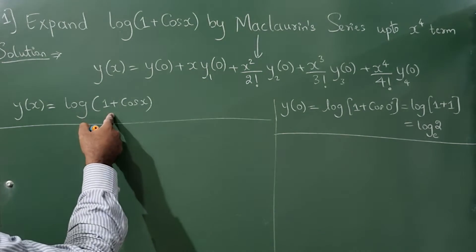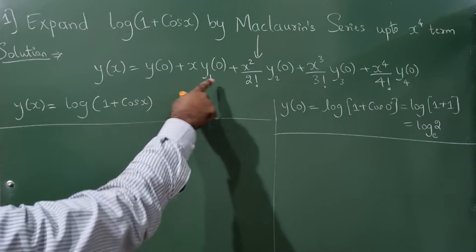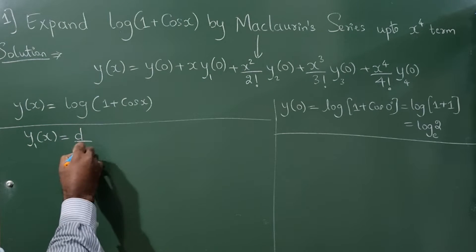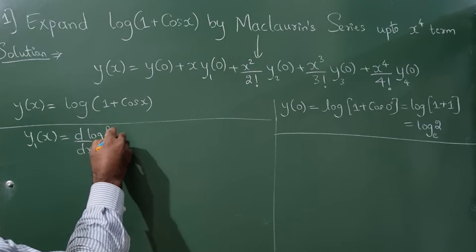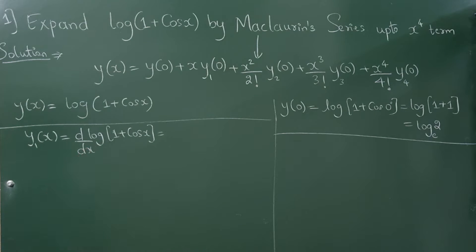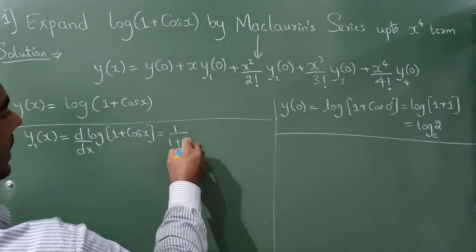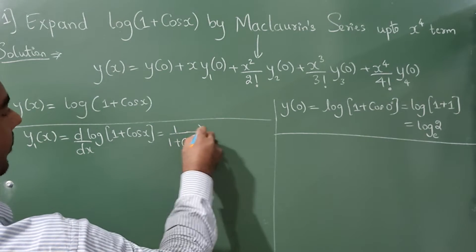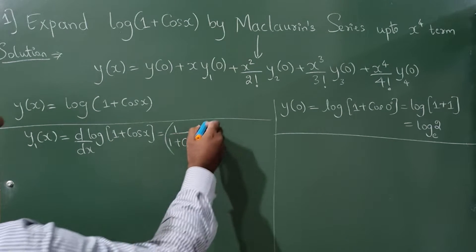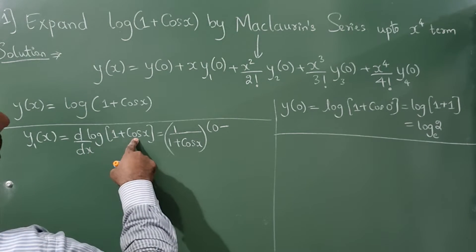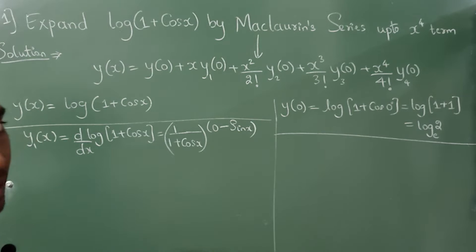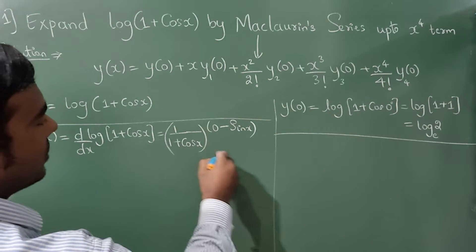Now differentiate to find y₁(x). By d/dx of log(1 + cos x), using the formula d/dx[log x] = 1/x and the chain rule: d/dx(1 + cos x) = 0 − sin x. So y₁(x) = −sin x / (1 + cos x).